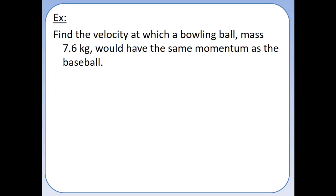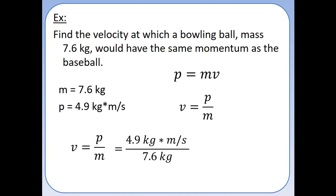What if we had a bowling ball with a mass of 7.6 kg that has the same momentum as our baseball? How fast would it have to be moving? Our baseball's momentum was 4.9 kg·m/s and our mass is 7.6 kg. To find velocity, we solve for v: v = p/m = 4.9 kg·m/s / 7.6 kg = 0.64 m/s. The bowling ball would have to be going only 0.64 m/s to have the same momentum as that smaller baseball traveling at 35 m/s.